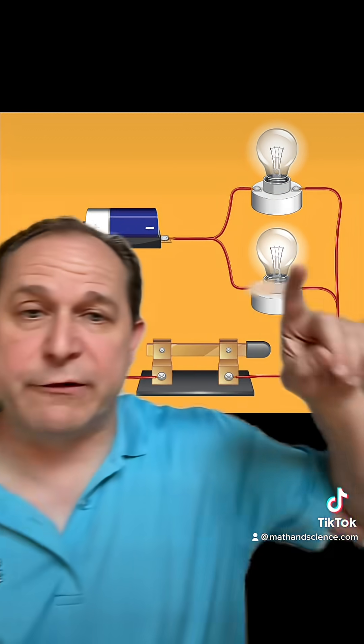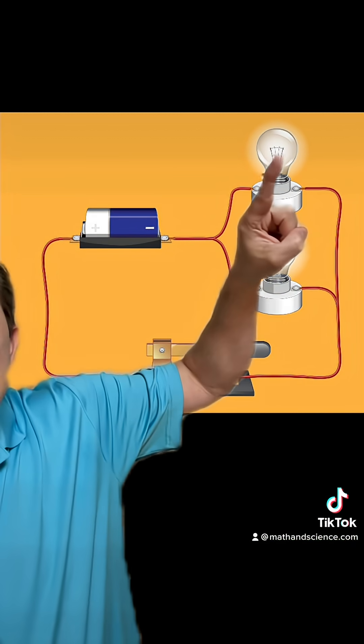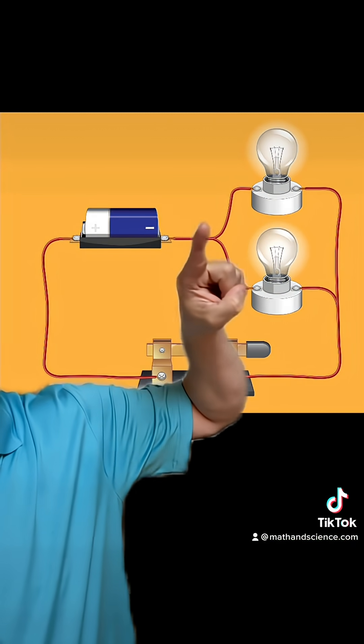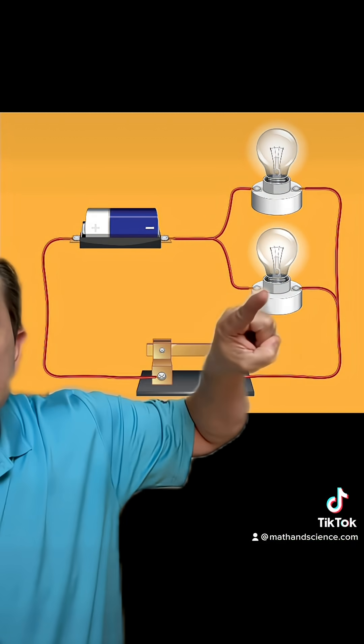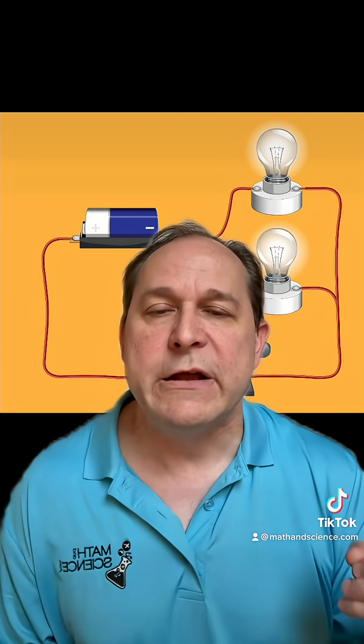In the parallel configuration, if this bulb burns out, because it's in parallel the electricity can still flow through the other bulb and keep it illuminated.